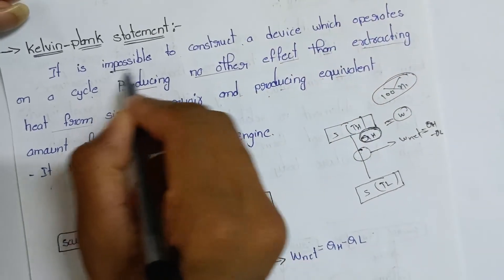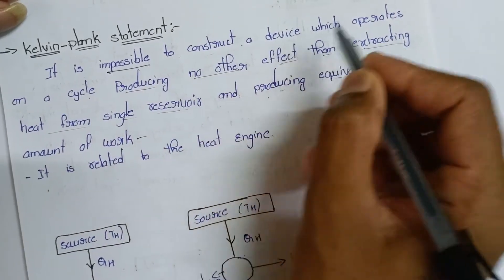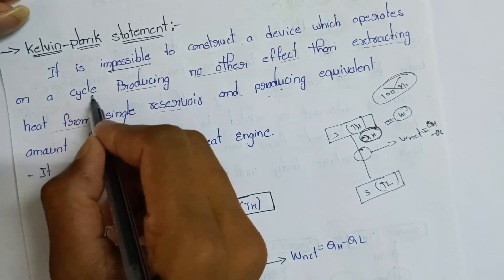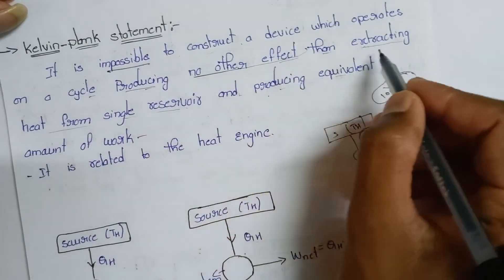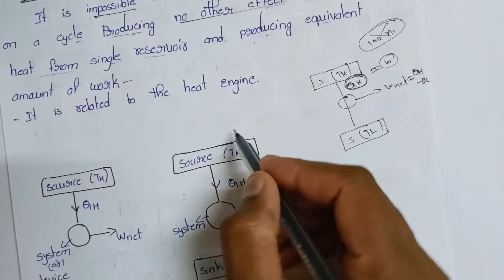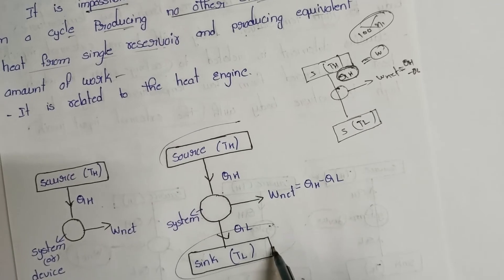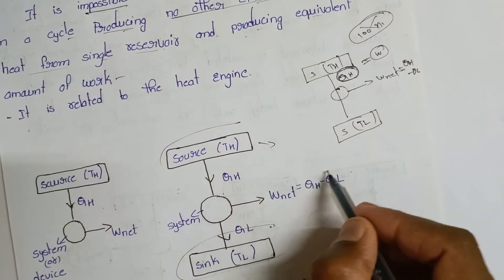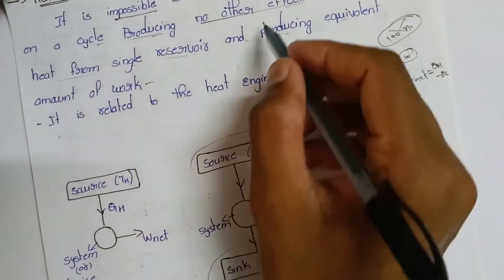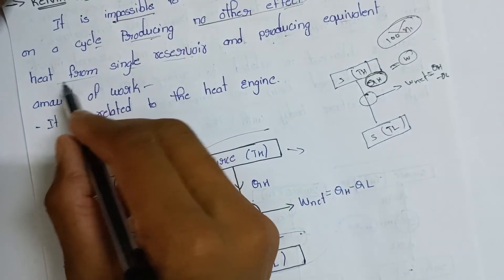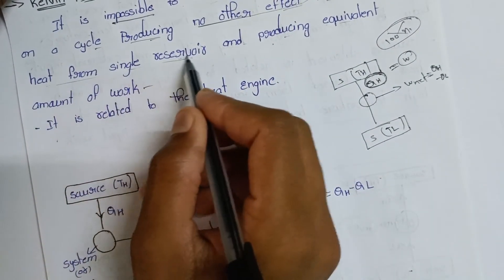It is impossible to construct a device which operates on a cycle producing no other effect. The source provides input and there's no other effect on the sink, only work output from a single reservoir.